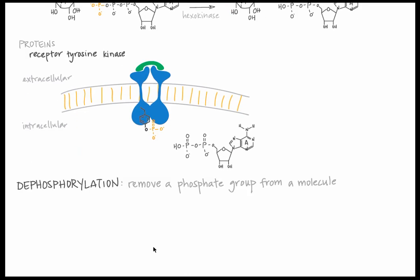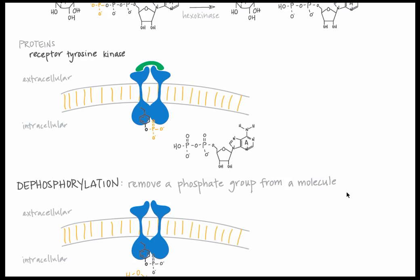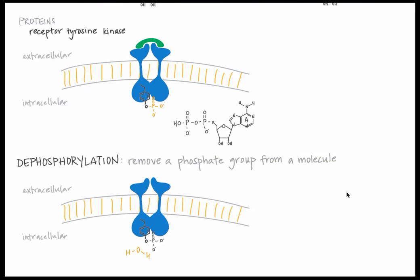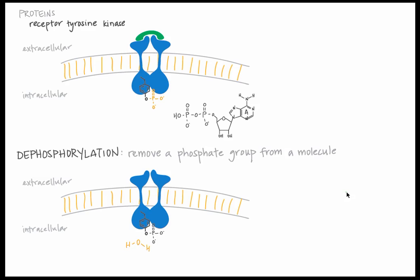Dephosphorylation is the removal of a phosphate group from a molecule. For example, here's what the dephosphorylation of an RTK would look like. As water is broken, the bond between phosphate and tyrosine is also broken, releasing inorganic phosphate.